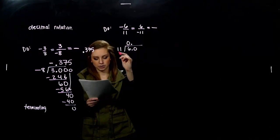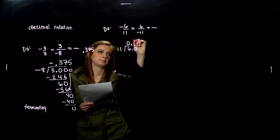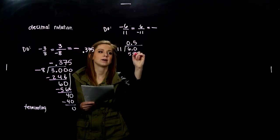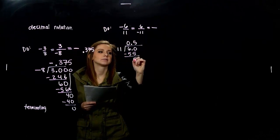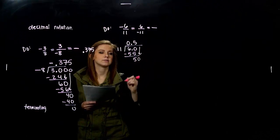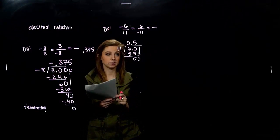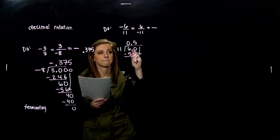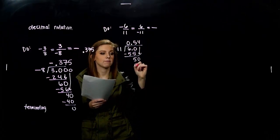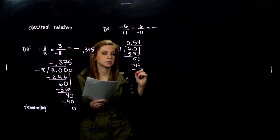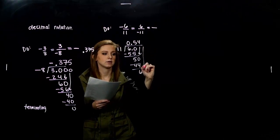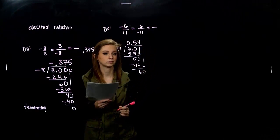So, how many times can eleven go into sixty without going over? Five. So, I'm looking at fifty-five. Difference. Bringing down another zero. How many times can eleven go into fifty without going over? Four. I'm looking at forty-four. Difference between those? Six. Bringing down a zero. What's happening?